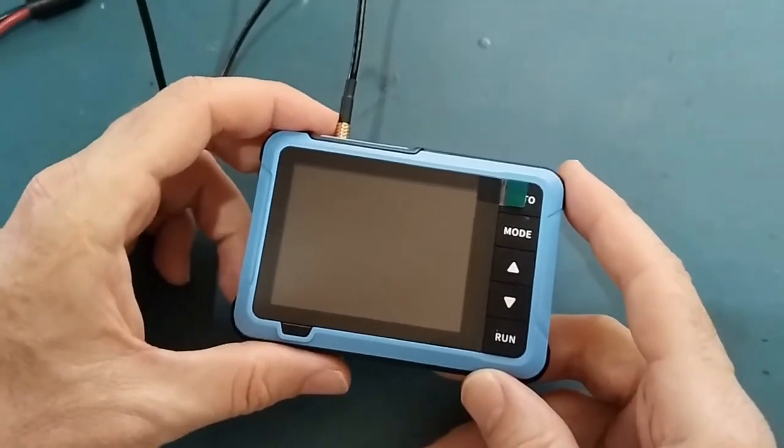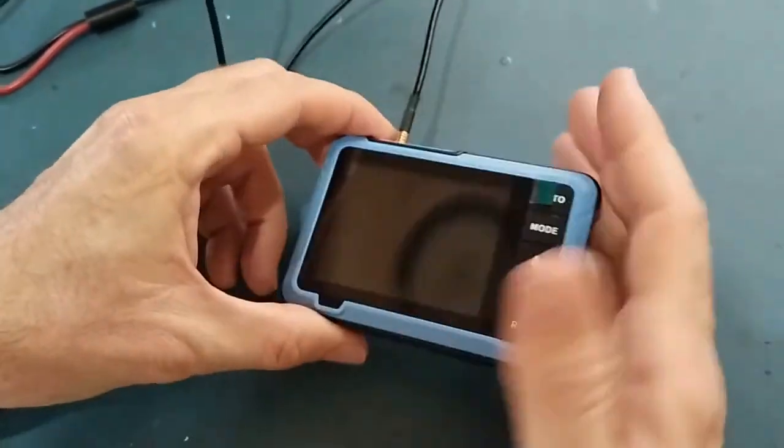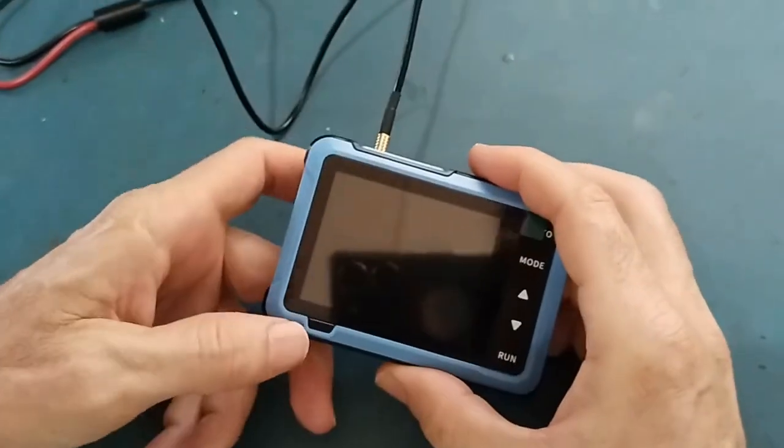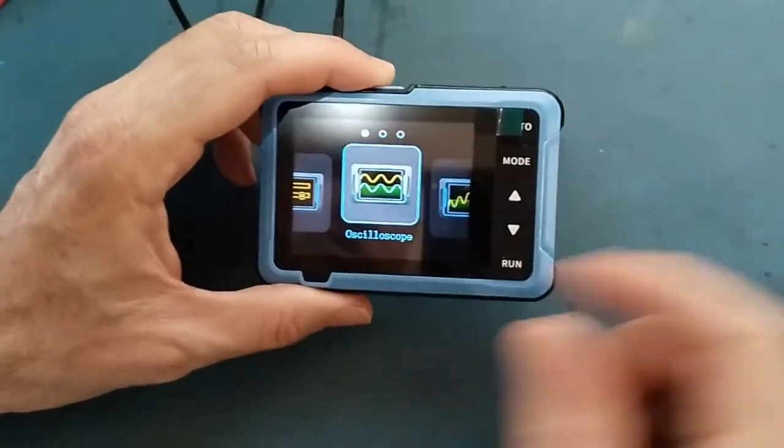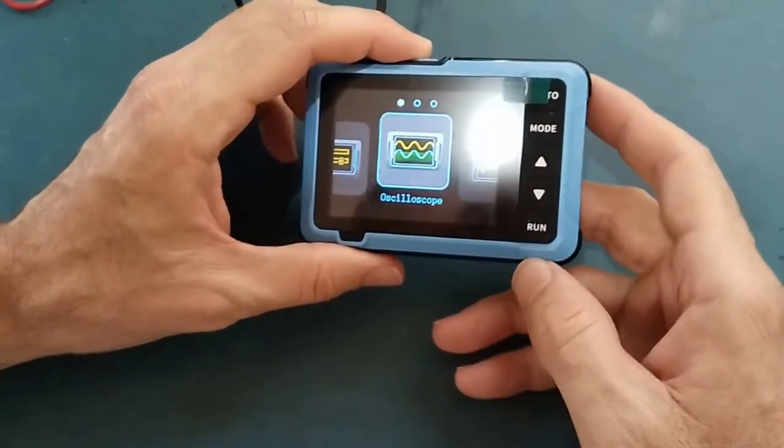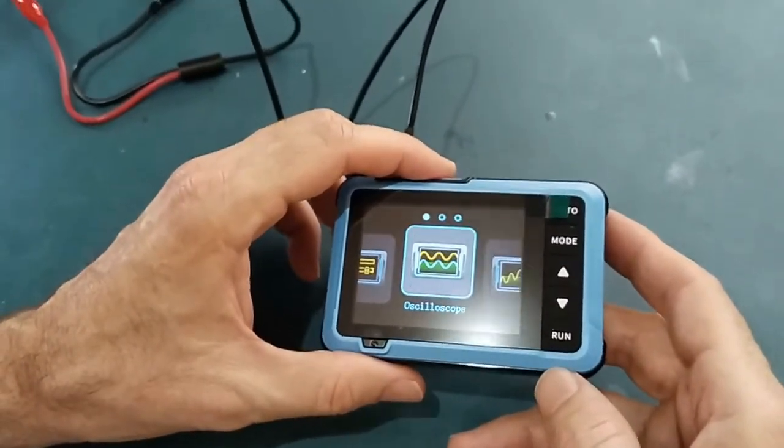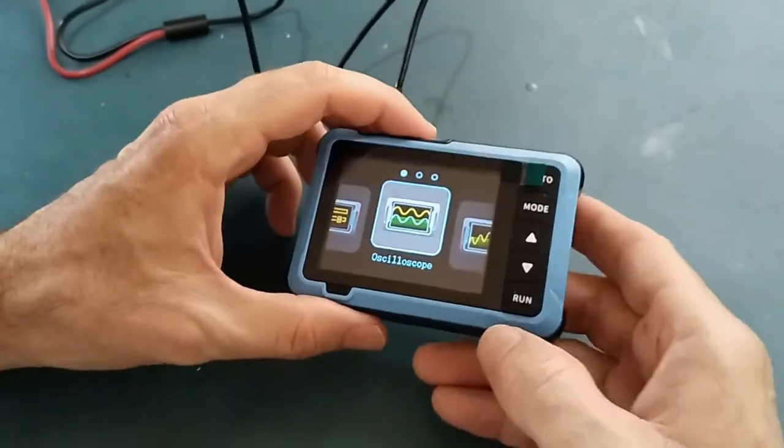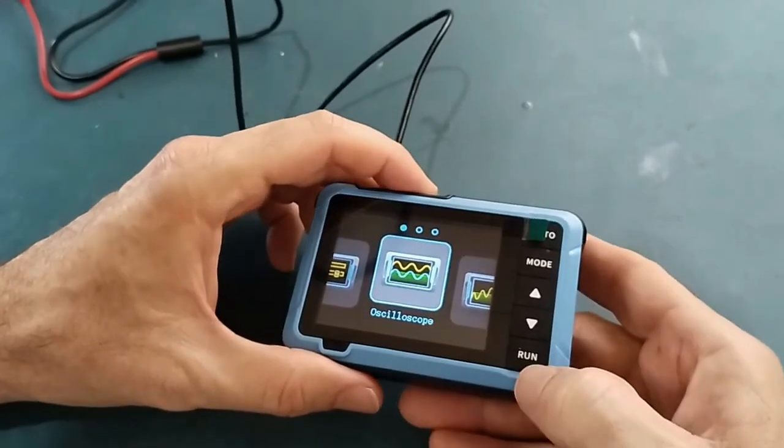The FNRC DSO510 is a portable battery-powered oscilloscope and wave generator. The oscilloscope, which I will demonstrate now, has a bandwidth of 10 megahertz and a sampling speed of 48 mega samples per second with a voltage input of 40 watts at times 10.